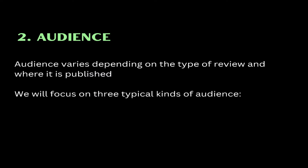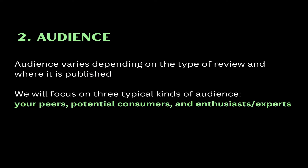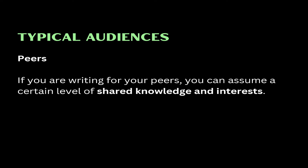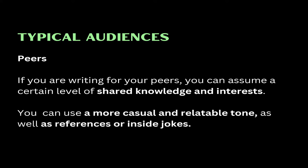The next feature we'll talk about is audience. Audience varies depending on the type of review and where it is published. In this video, we'll focus on three typical kinds of audience: your peers, potential consumers, and enthusiasts or experts. The first type of audience could be your peers — this is the case when the exam question asks you to write a review for a school magazine, for example. The students who read that magazine are teenagers, just like you, so you can expect a certain level of shared knowledge and interests. This also means you can use a more casual and relatable tone, as well as references or inside jokes.